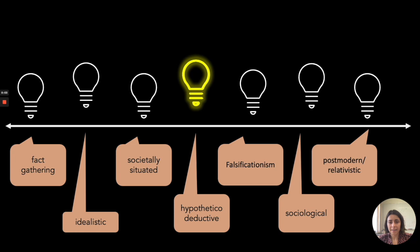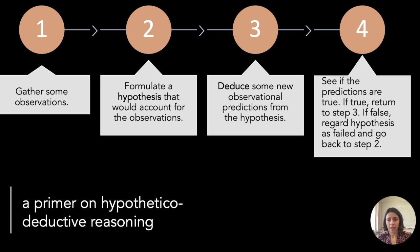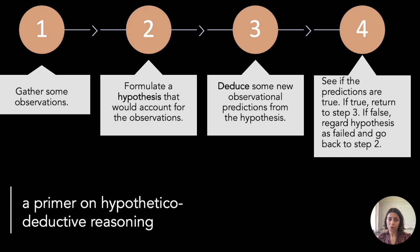The next theory is the hypothetical deductive method. Here's how it works: first, you gather observations; then you formulate a hypothesis to account for those observations; next you deduce new observational consequences or predictions from that hypothesis; finally you see if the predictions are true. If true, you go back to step three to derive more consequences. If the predictions are false, you go back to step two and reformulate a new hypothesis.